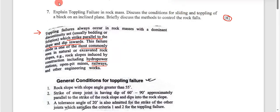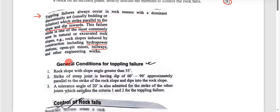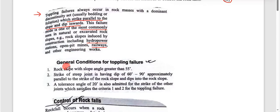General conditions of toppling failure: Number one, rock slope with slope angle greater than 55 degrees. Number two, strike of stiff joint having dip of 60 to 90 degrees.